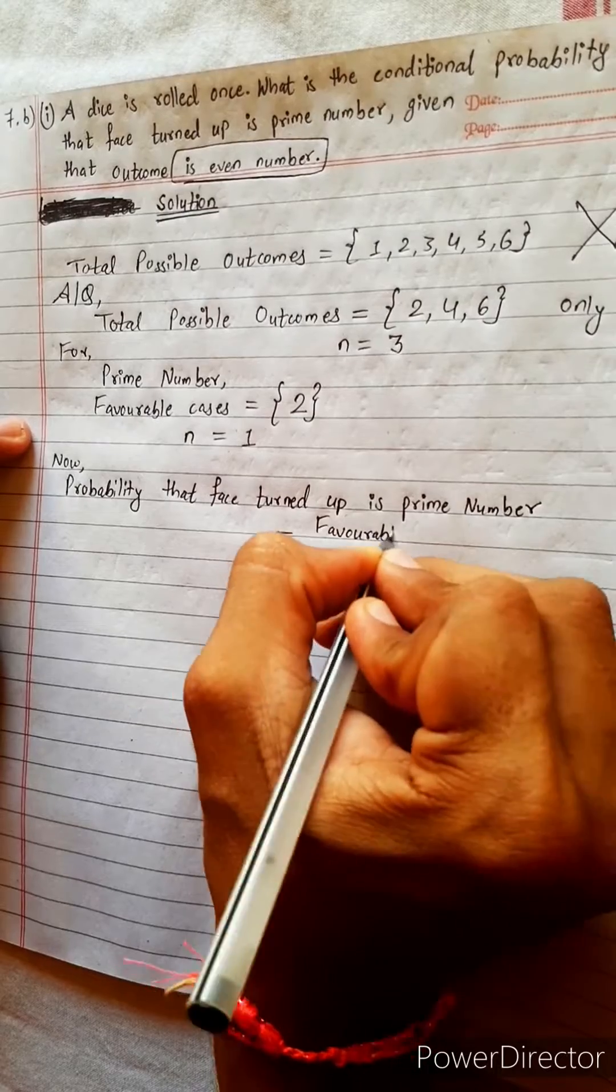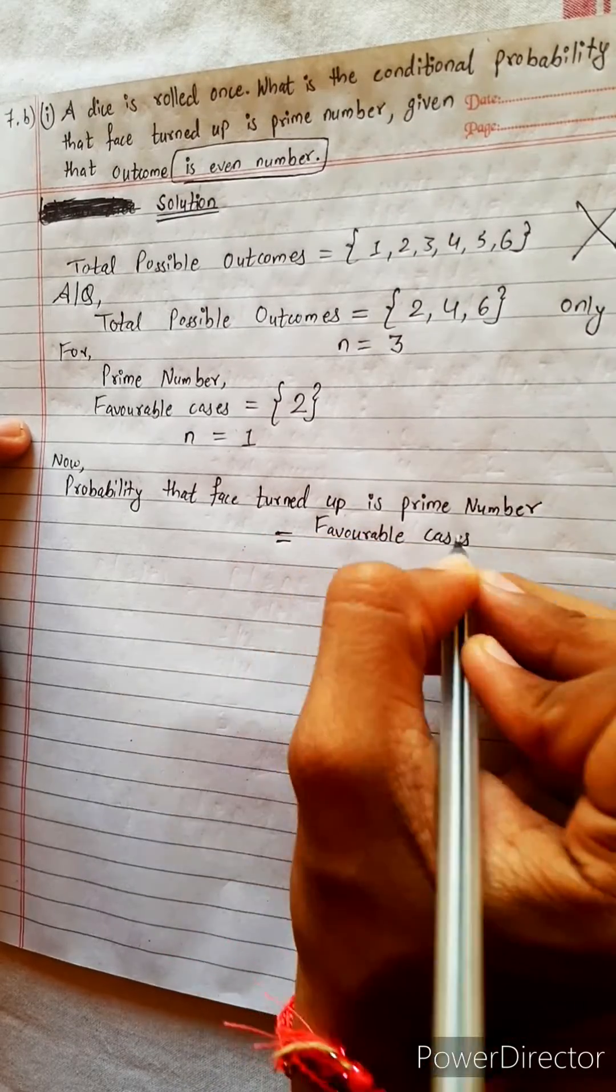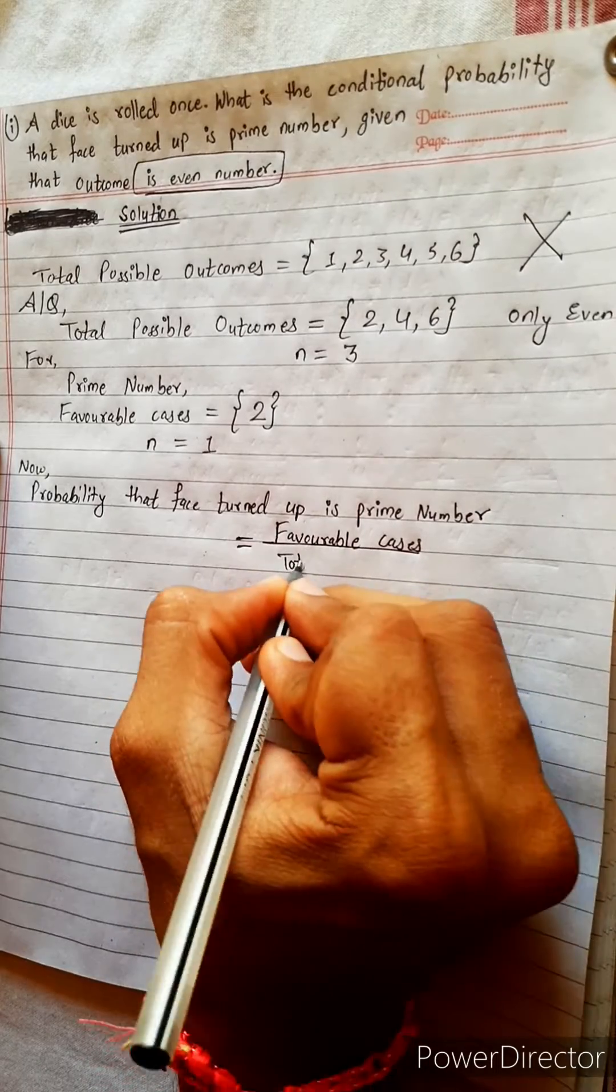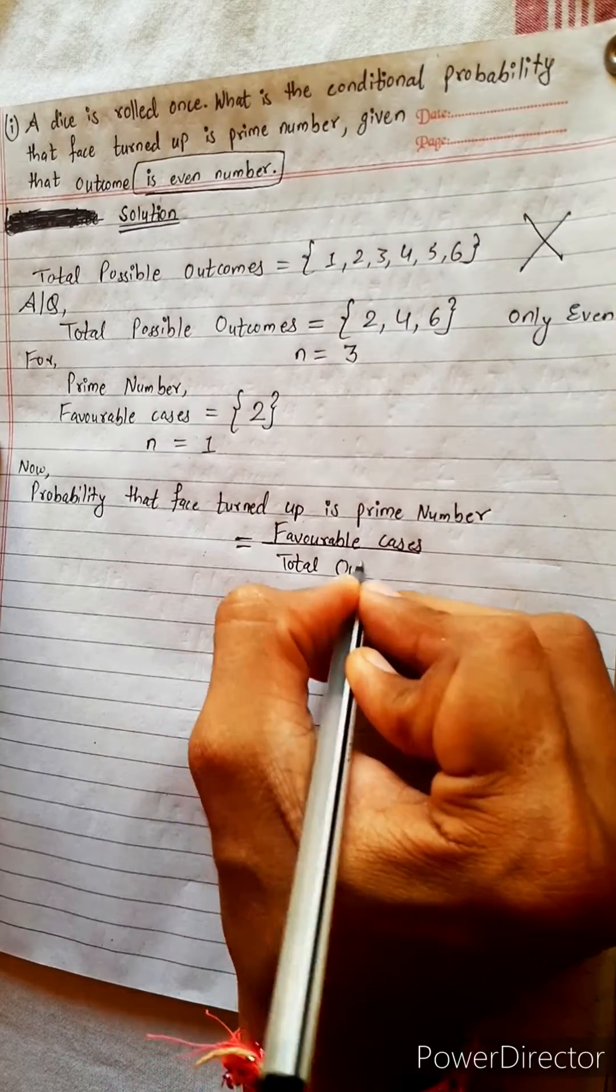Favorable cases divided by total outcomes, total outcomes.